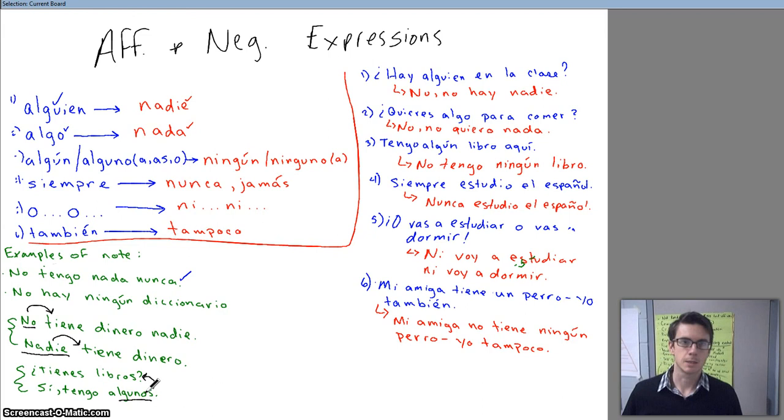I want to point out really quickly as well, this one here. Here, you might notice that in the affirmative, it has a plural option. Algunos, algunas. But in the negative, there is no ningunos, ningunas. Why is that? Because you can't have plural of nothing. Alright? So, if you have nothing, you can't have more than one nothing. That's why you will never see this, right here, written in the plural. Okay?